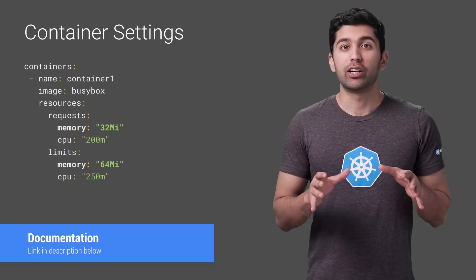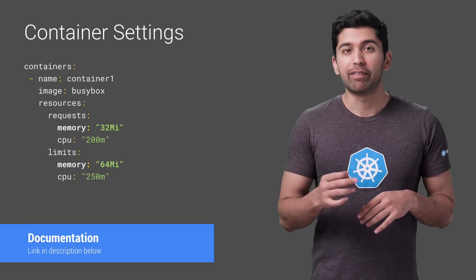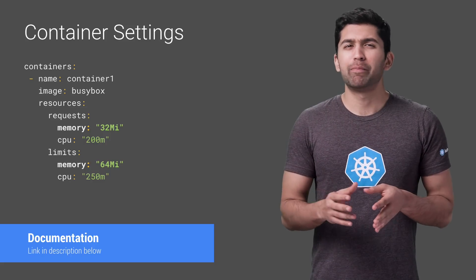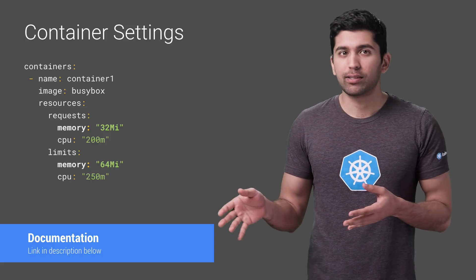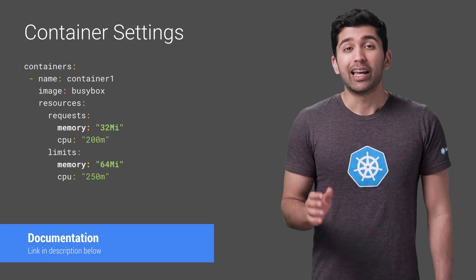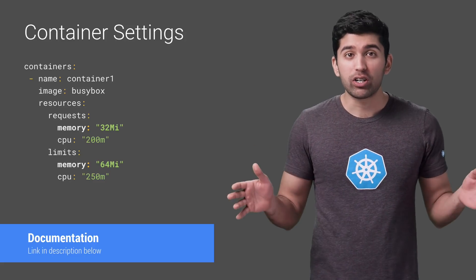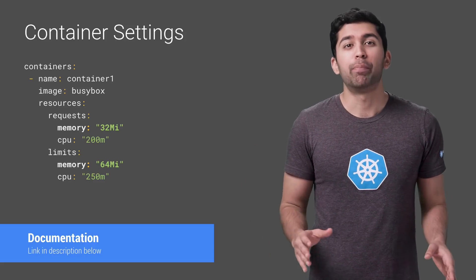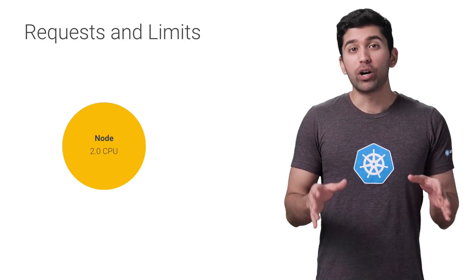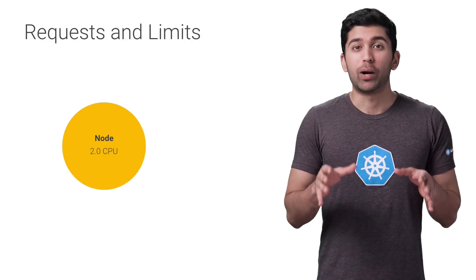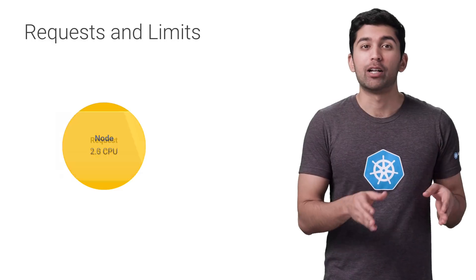Memory resources are defined in bytes. Normally, you give a mebibyte value for memory, but you can give it anything from bytes to petabytes. Just like CPU, if you put a memory request that's larger than the amount of memory on your nodes, the pod will never be scheduled. Unlike CPU resources, memory is not compressible. Because there's no way to throttle memory usage, if a container goes past its memory limit, it'll be terminated. It's important to remember that you cannot set requests that are larger than the resources provided by your nodes.